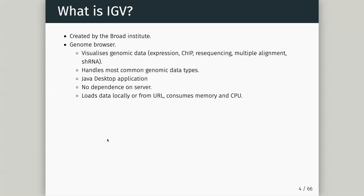We will need to perform an alignment, and if we want bigwigs we'll need to summarize that alignment. We'll cover that in the first few sessions in Bioconductor. IGV handles most common genomic data types - it recognizes the file extension and loads them without us having to specify anything. It's a Java desktop application, though now you can download it with Java built in so you don't need to install Java yourself.